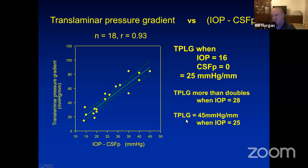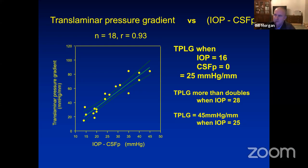The trans-lamina pressure gradient in the dogs was about 45 millimetres of mercury per millimetre of tissue when the intraocular pressure was about 25. The reason for mentioning that figure is that other people using rabbit sciatic nerve had found that this was about the gradient at which axonal transport was affected by a pressure gradient.